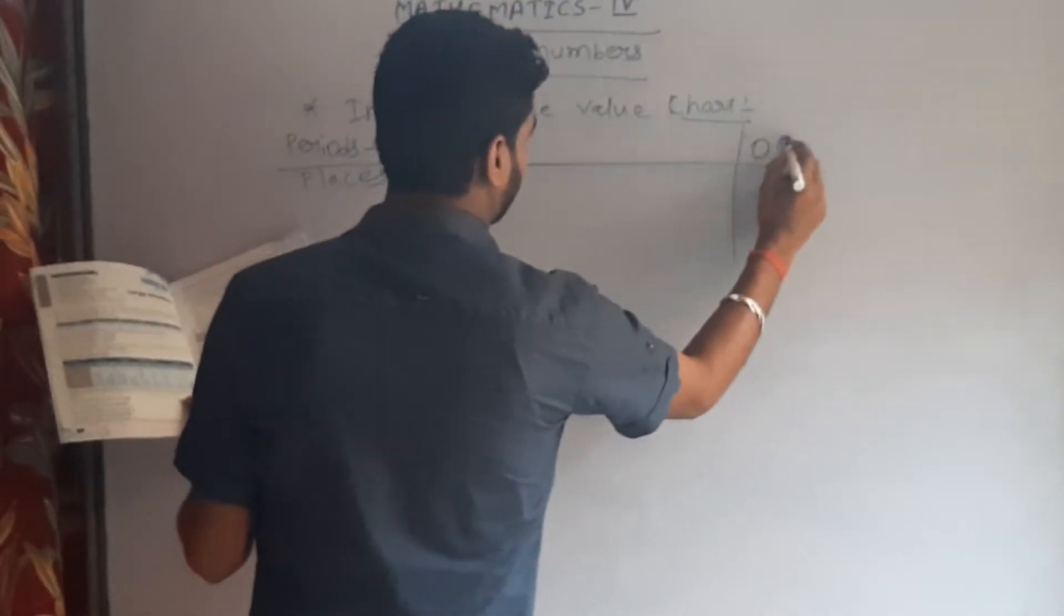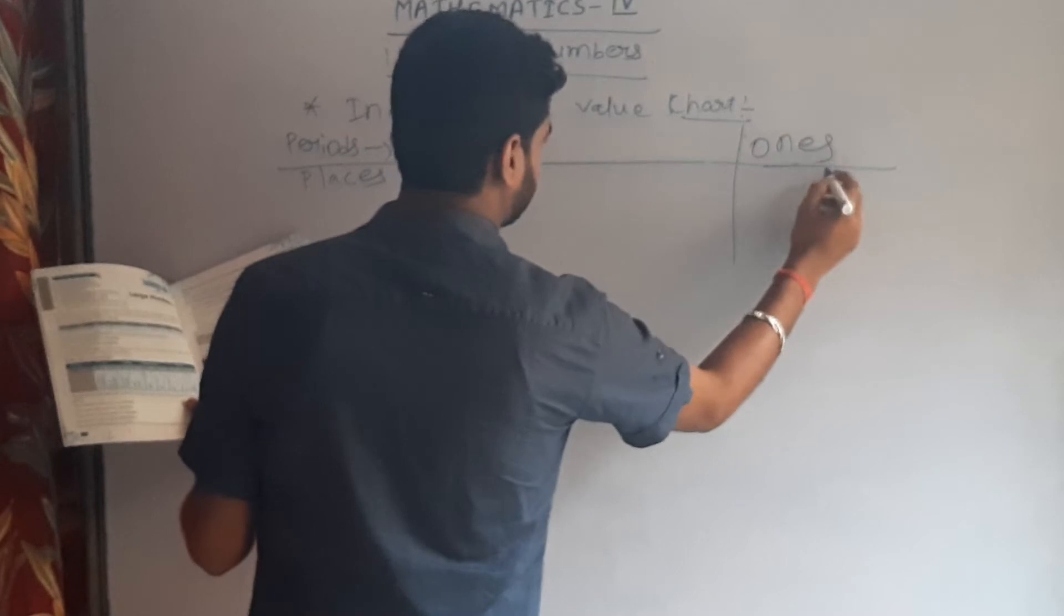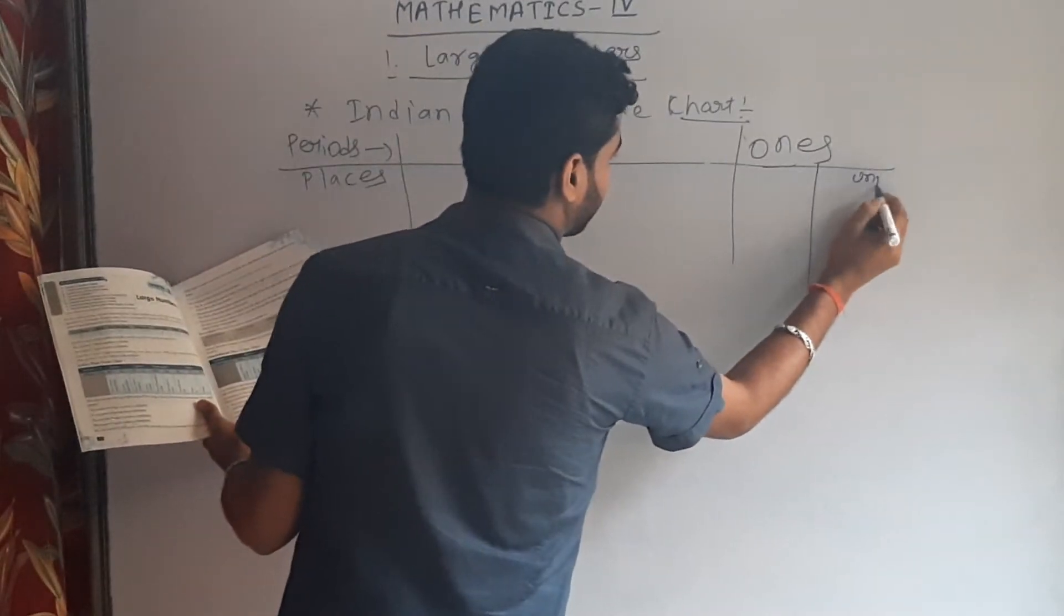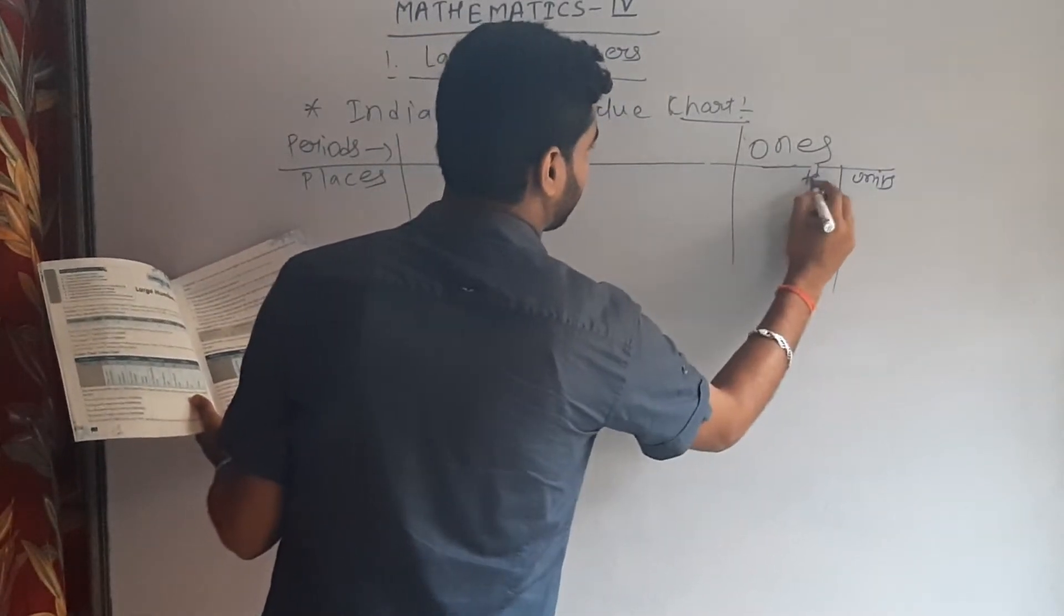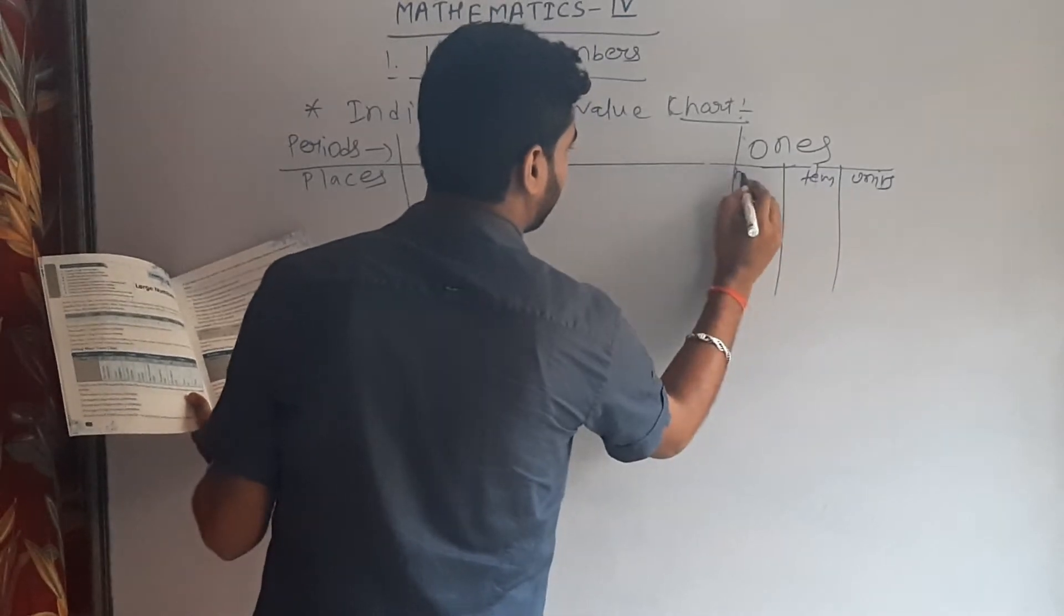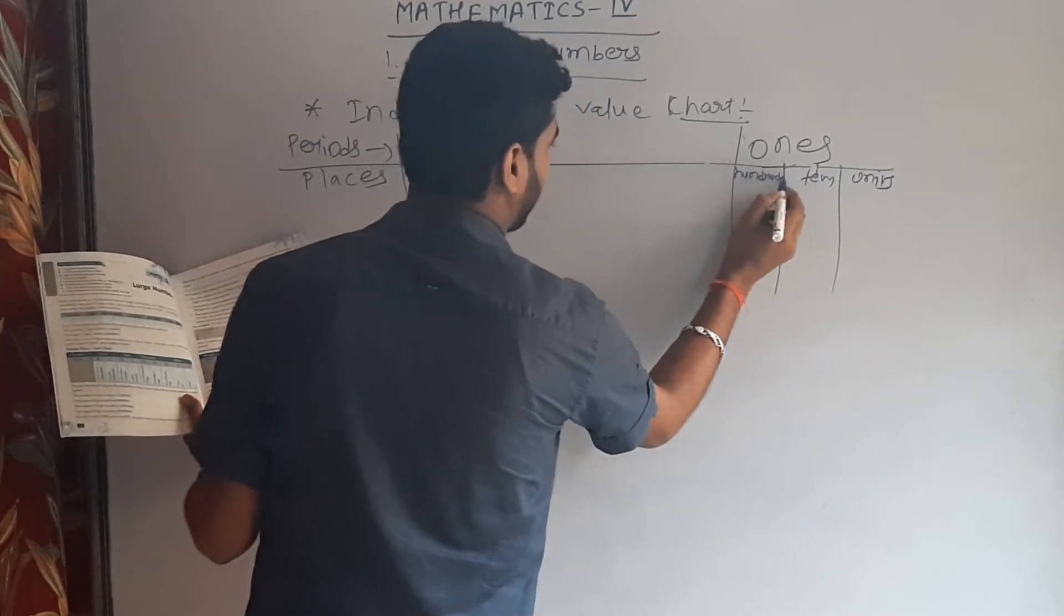In one period, here comes unit digit, tens digit, and hundred digit.